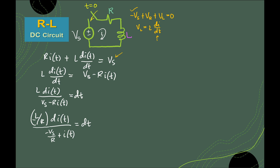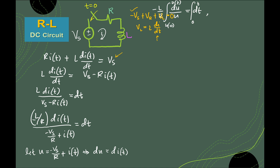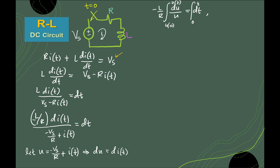Try to arrange the equation such that the coefficient R in i(t) is removed, and handle the negative sign so it becomes positive. Substitute u equal to Vs/R minus i(t) — or negative Vs/R plus i(t) — then du equals di(t). This substitution is important so that we will have the equation in integrable form, with negative L/R, integrating from u(0) to u(t), with du over u in the denominator.